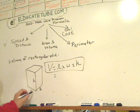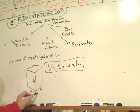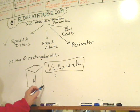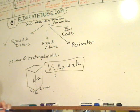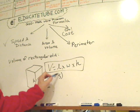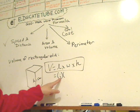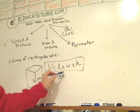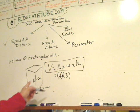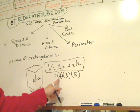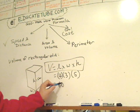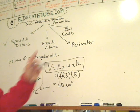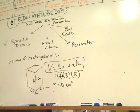For example, let's say the width was 3 centimeters, the length was 4 centimeters, and the height was 5 centimeters. What is the volume of this rectangular solid? The length is 4, the width is 3, and the height is 5. So you can go 4 times 5 times 3. Four times 5 is 20, times 3 is 60 — so 60 centimeters cubed. Or you can say 12 times 5 is 60. Same thing. The answer is 60 centimeters cubed.